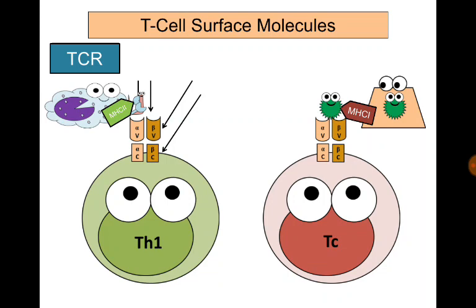T-cell receptors are very specific and identify only a certain antigen. One T-cell identifies tuberculosis, for example; another identifies hepatitis B, and another identifies hookworm, and so on. All T-cell receptors on a single T-cell identify the same antigen.